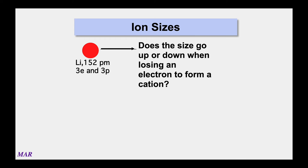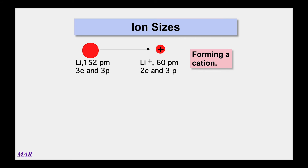The sizes of ions also follow the pattern of being bigger left and down, but there's an important exception: there's a big difference between the size of a positive ion versus a negative ion. For example, neutral lithium has three electrons and three protons. When lithium loses an electron to form lithium⁺, is it bigger or smaller? Lithium⁺ is certainly smaller, because the protons are still pulling on the electrons. You can think of protons as parents and electrons as kids — three protons and only two electrons means those electrons are pulled in much more tightly.